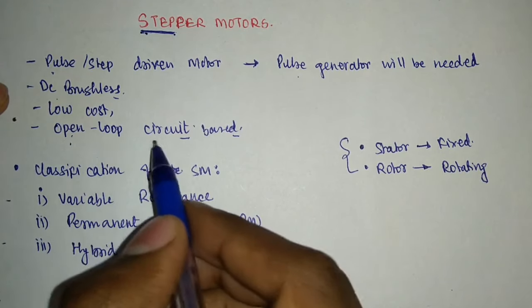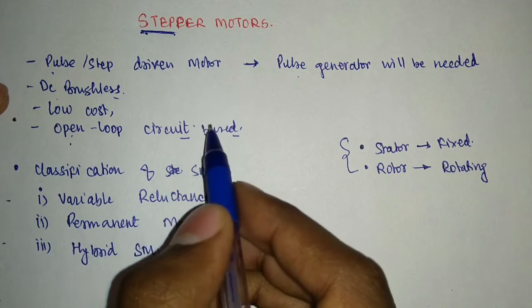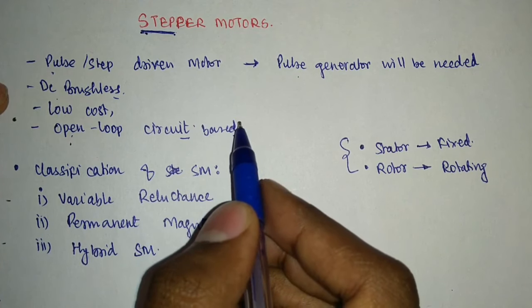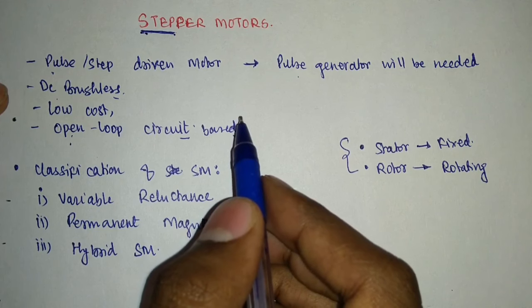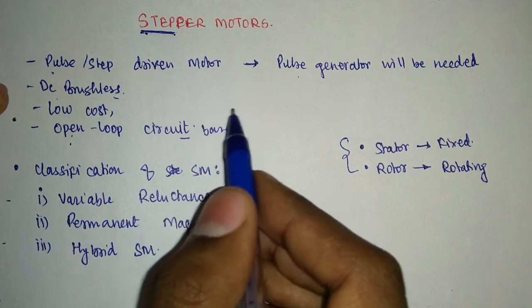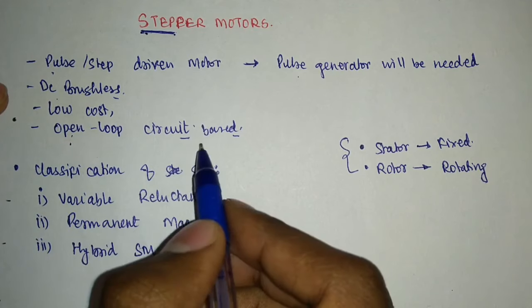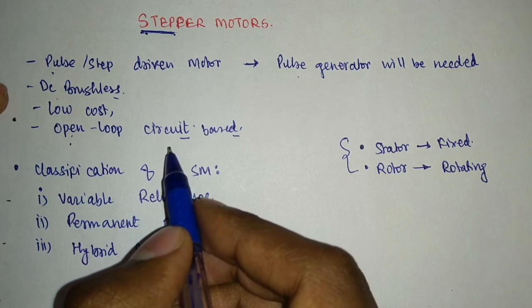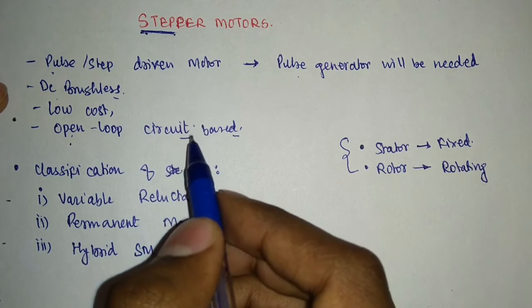What do we mean by open-loop circuit based? It means there is no feedback or no sensing of the output of the stepper motor. We simply give the command and we get the output — we do not read the output to check whether it is equivalent to the input. So there is no feedback system here; it is an open-loop circuit. If we want a feedback system then we use servo motors, which are continuously monitoring motors and also costly in nature because they have a feedback system.